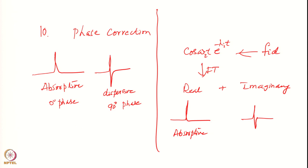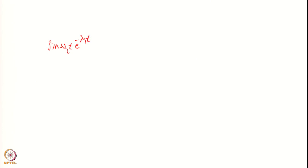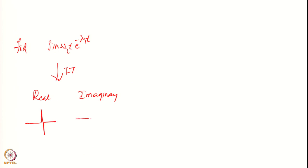Similarly, if my FID is of the type sin(ω_i · t) · e^(−λ_i · t), then after Fourier transformation I will get a real part and an imaginary part. The real part will have the dispersive signal and the imaginary part will have the absorptive signal. Therefore, we have to see what it is that we are going to get in the FTNMR spectrum.